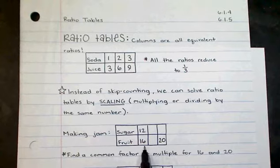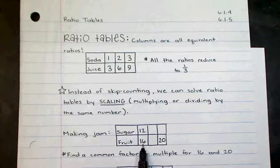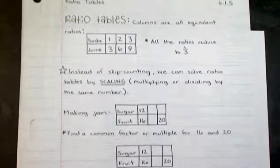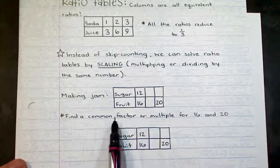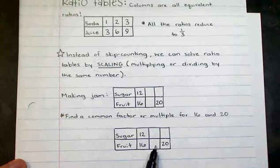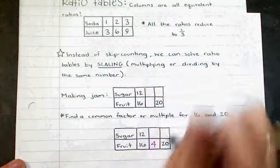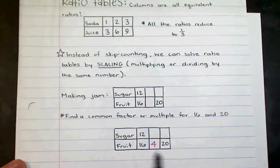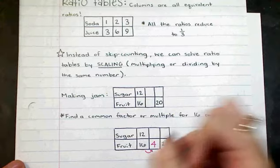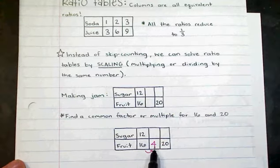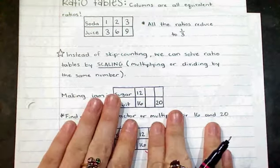And here, there's nothing that I can skip straight towards to get from 16 to 20. There's nothing I can multiply or divide by. So what I'm going to do is I'm going to figure out either a common factor or a common multiple for 16 and 20. So I know that 16 and 20 have a common factor of 4.